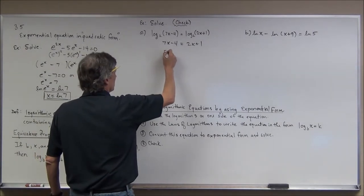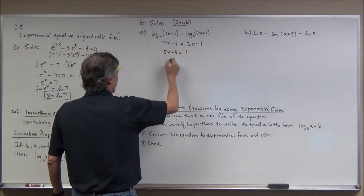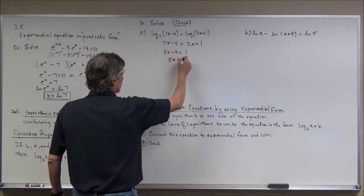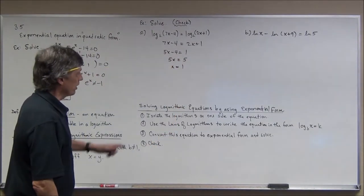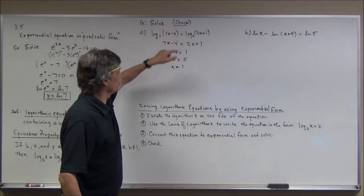Well that's a simple equation to solve. I'll subtract 2x from both sides, I'll add 4 to both sides, and I'll divide by 5. And I get x equals 1. Now here's where it says check up here, you should check this.